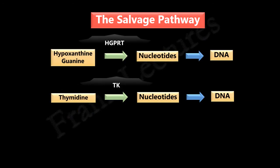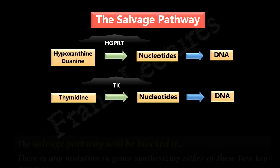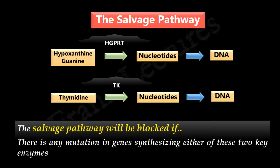If there is any mutation in the genes producing either of these two key enzymes, the salvage pathway will be blocked. This is because the mutation will make these enzymes non-functional. So we now understand that HGPRT is a key enzyme in the formation of nucleotides by the salvage pathway.